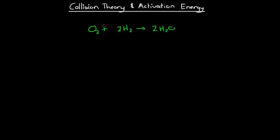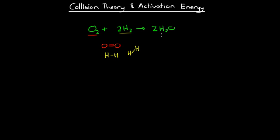What actually happens when this reaction occurs? If we have one molecule of oxygen bonded like this — we draw the structural formula — we've got one molecule of oxygen and two molecules of hydrogen. What actually happens when these three molecules react to produce water? The way that they react is that they collide with one another. When a reaction occurs, such as the reaction between oxygen and hydrogen, it occurs as a result of reactant particles colliding with one another. If this oxygen molecule and these two hydrogen molecules all collide together, then sometimes they will produce a water molecule.